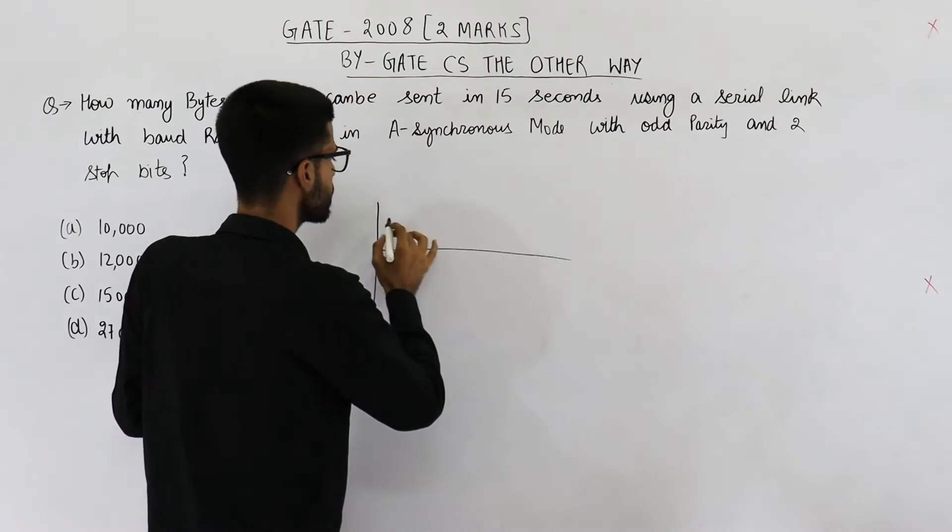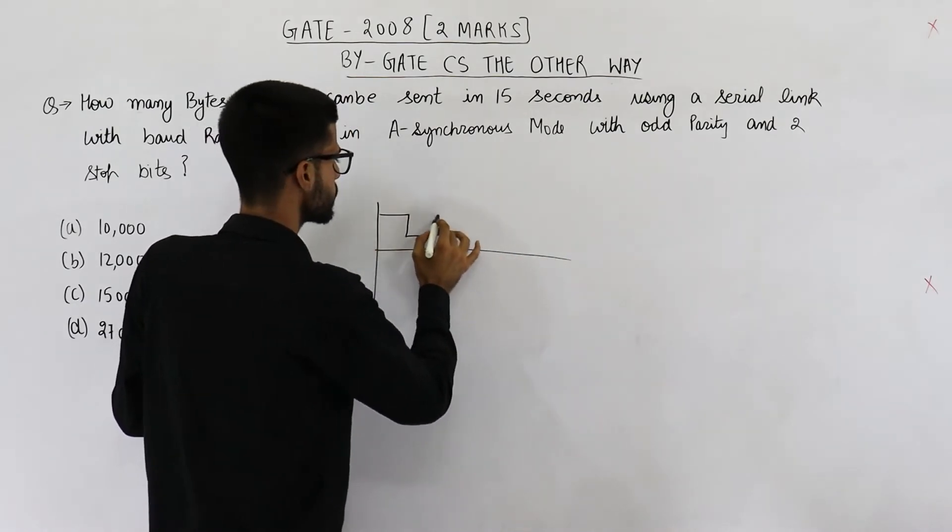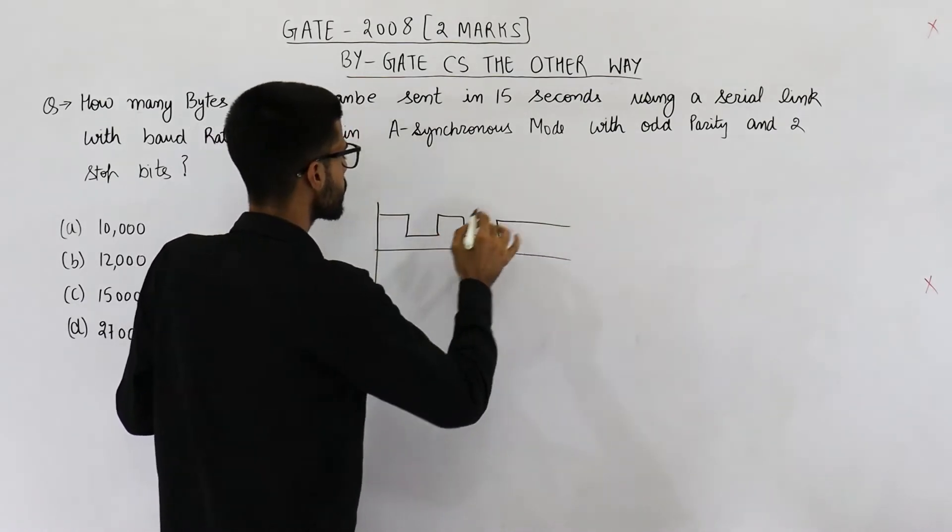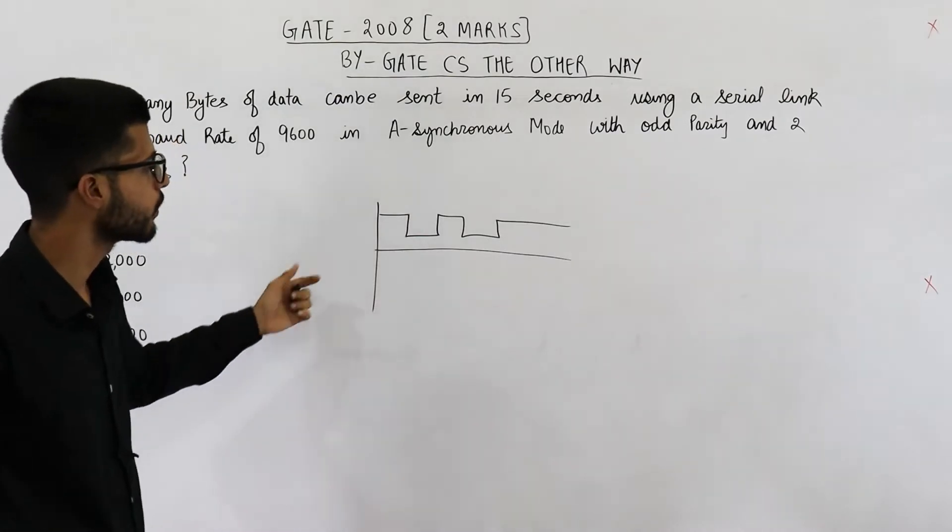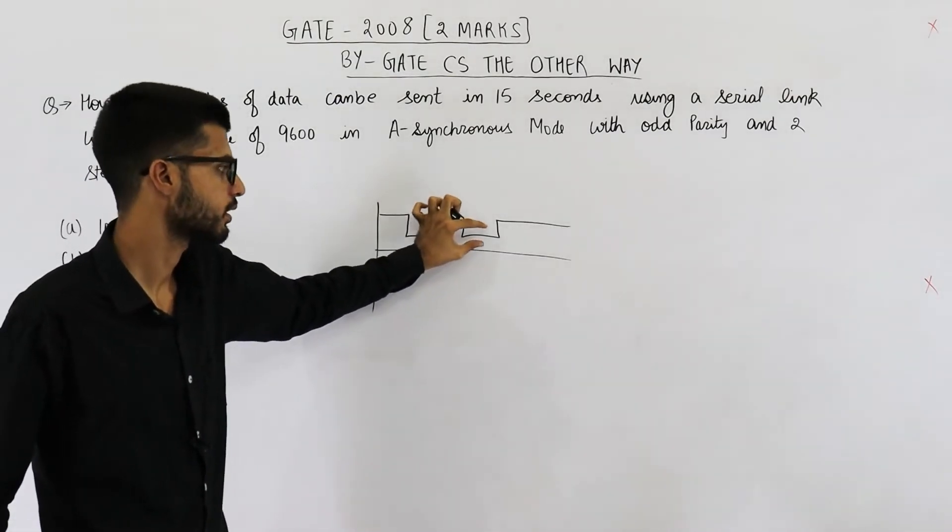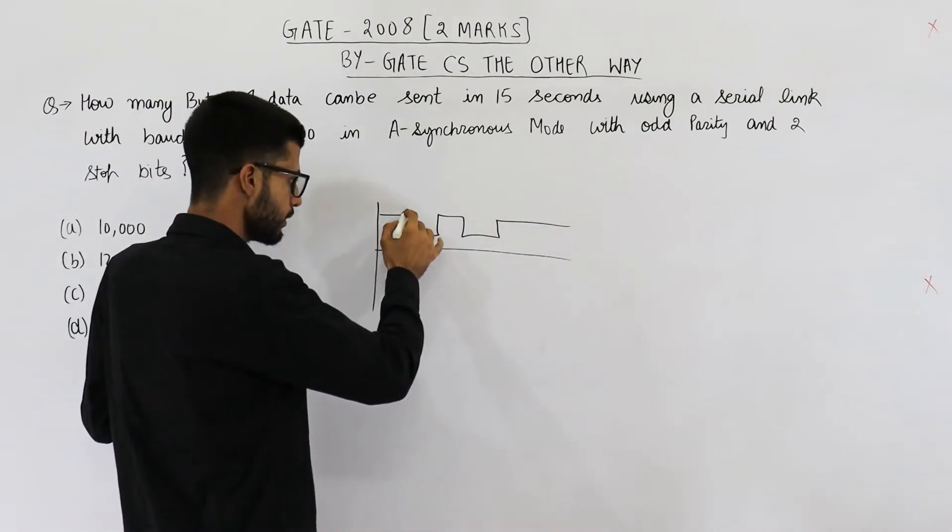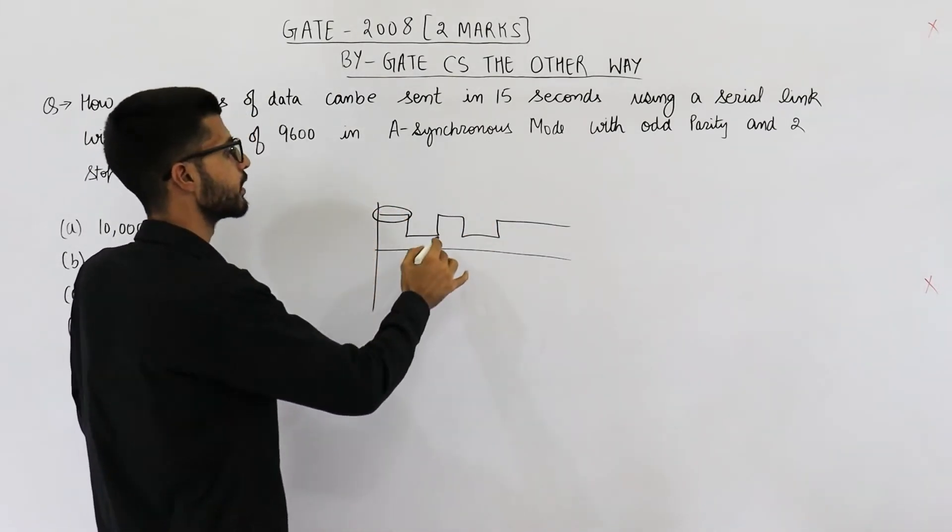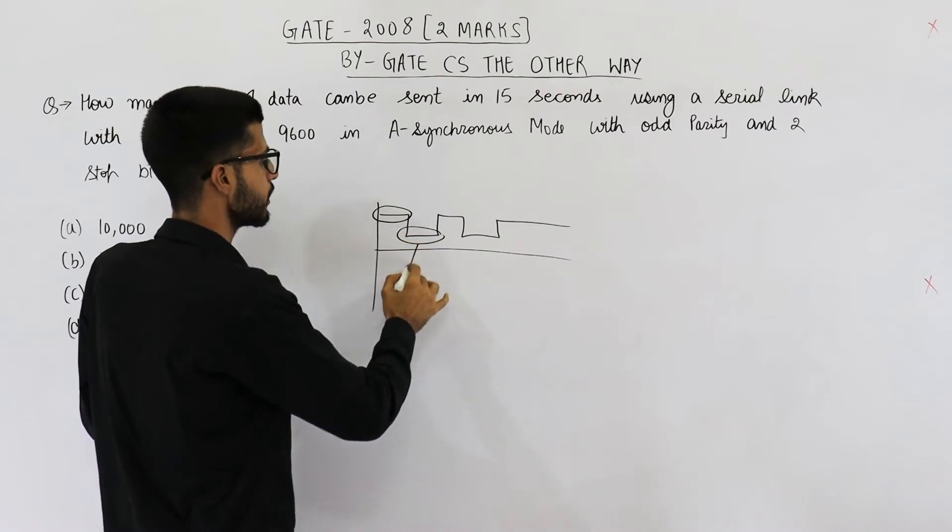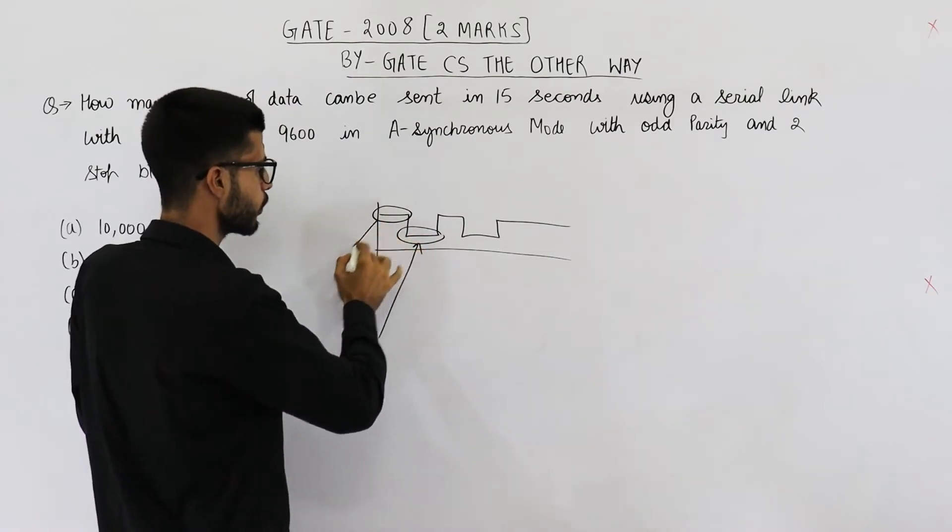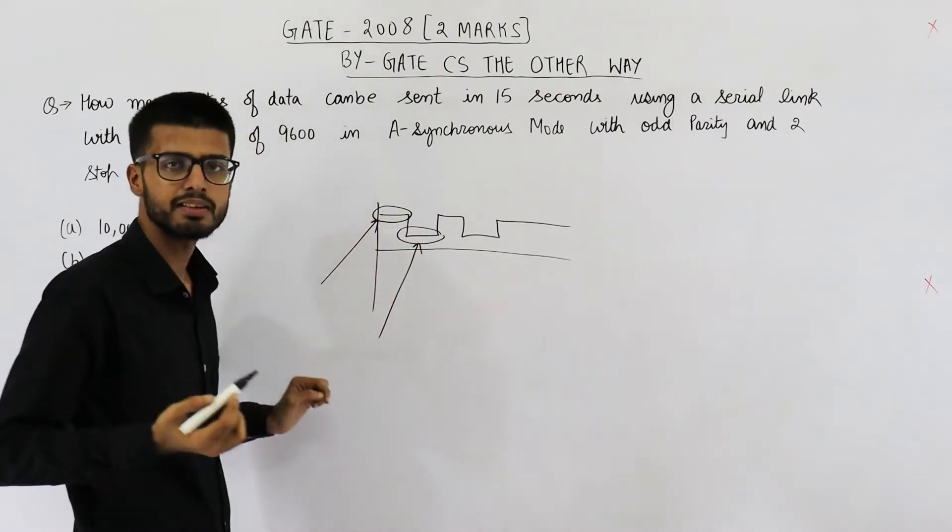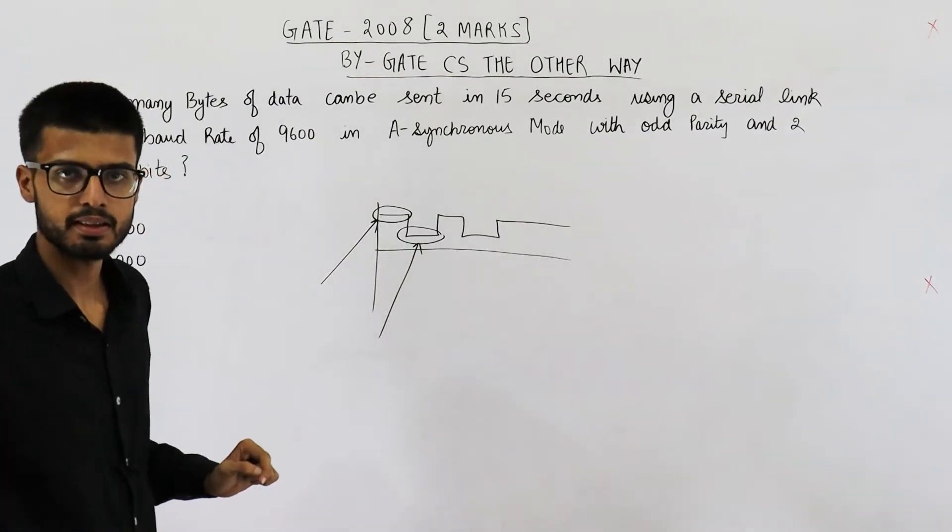See, digital signals contain varying voltages. So some digital signal can look like this: high voltage, low voltage, high voltage, again low voltage, then high voltage. This is called a signaling event. Voltage here is low, voltage here is high. So this is called one symbol or one signaling event.